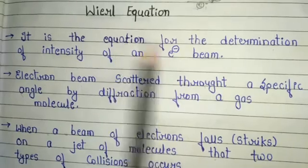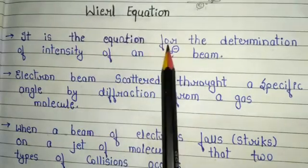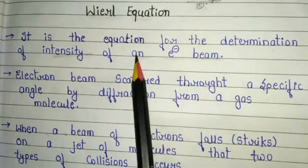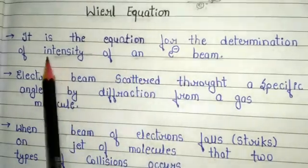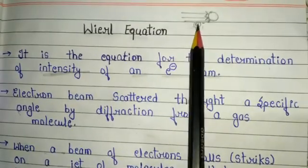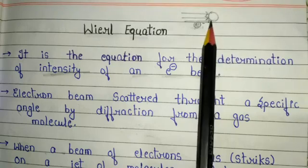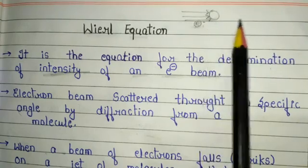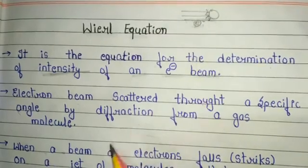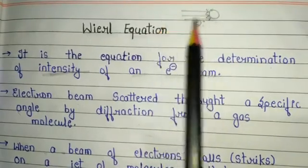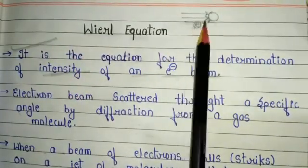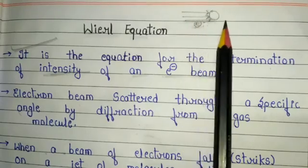So what is the basic introduction of the Virial equation? It is the equation for determination of the intensity of the electron beam. Basically, this equation is used to determine the intensity of any electron beam when it strikes a jet of molecules.